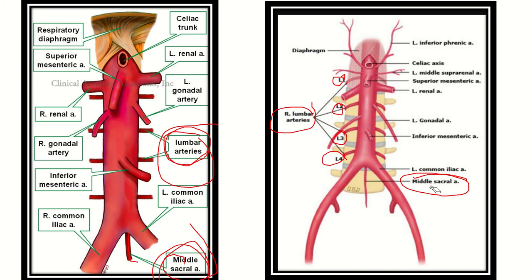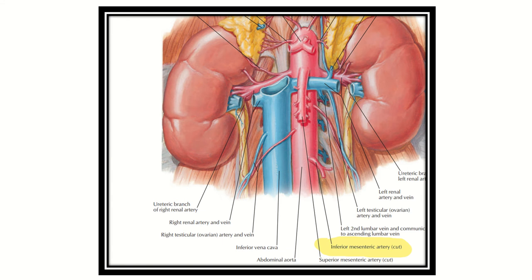The lumbar arteries are four pairs in number. The lateral branches of the abdominal aorta include the inferior phrenic artery, middle suprarenal artery, renal artery, and gonadal artery. So these four are the lateral branches of the abdominal aorta: phrenic artery, middle suprarenal, renal, and gonadal — these are the lateral parts.